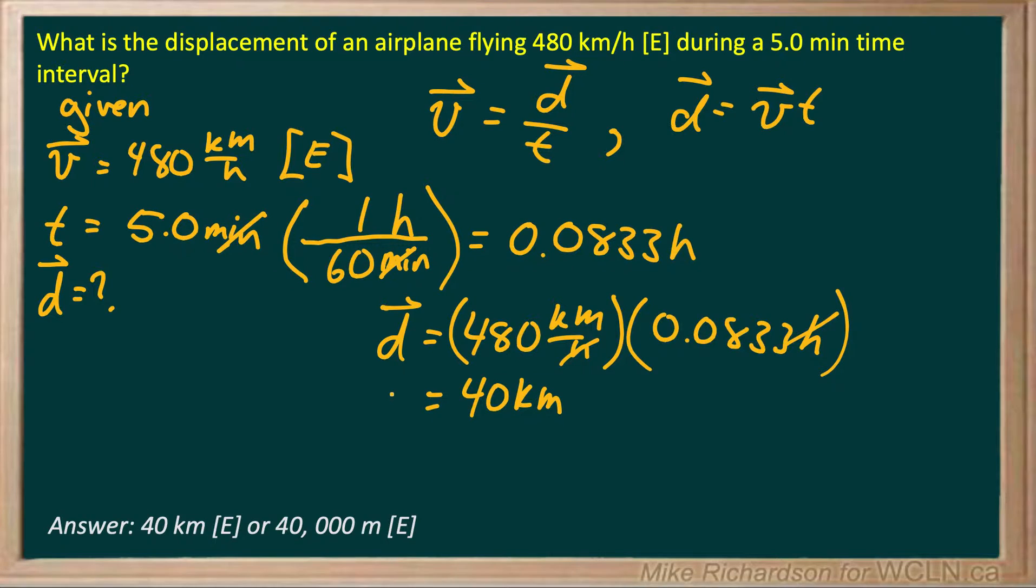So, my displacement is 40 kilometers. Now, I can write that in meters simply by taking my kilometers and multiplying by 1,000. So, in meters, my displacement would be 40,000 meters. Both of these are vectors, so we need a direction. My displacement will be east in both cases. And we're done.